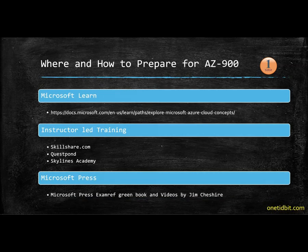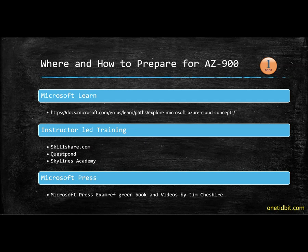Now let's see how to prepare for AZ-900. Microsoft Learn provides all the learning lessons, which are self-paced. You can also learn from an instructor — for example, Skillshare.com is offering a 60-day free trial, and the link is in the video description. You can learn AZ-900 instructor-led training from Anand and Shivakrasa Skorala, or visit Pluralsight or Skylines Academy.